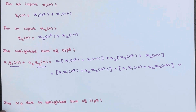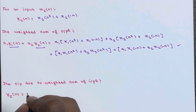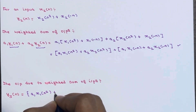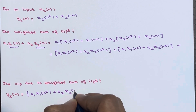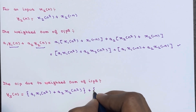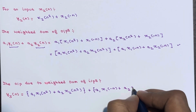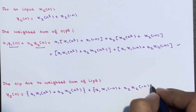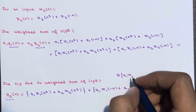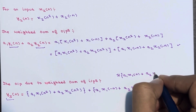Now calculate the output due to the weighted sum of inputs. The first term is x of n squared, so it becomes a1 times x1 of n squared plus a2 times x2 of n squared. The second term is x of minus n, so it becomes a1 times x1 of minus n plus a2 times x2 of minus n. So y3 of n is the transform of a1 times x1 of n plus a2 times x2 of n.